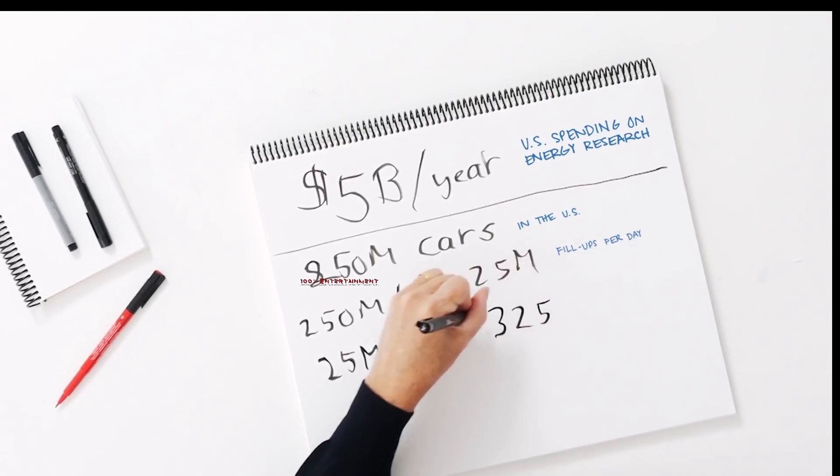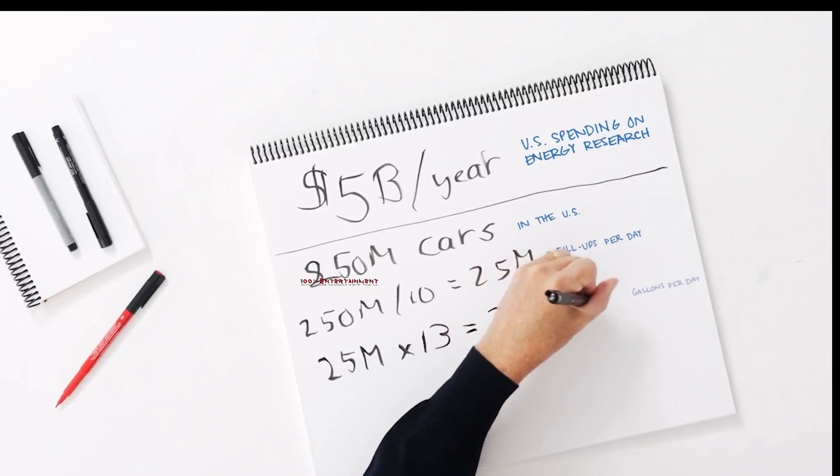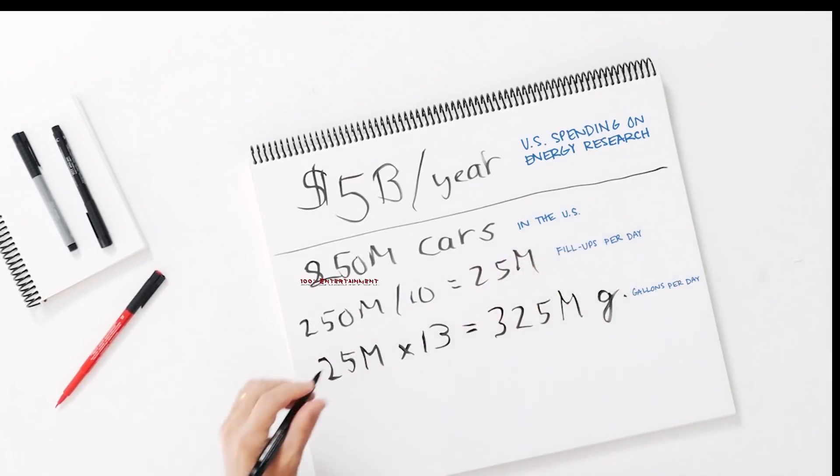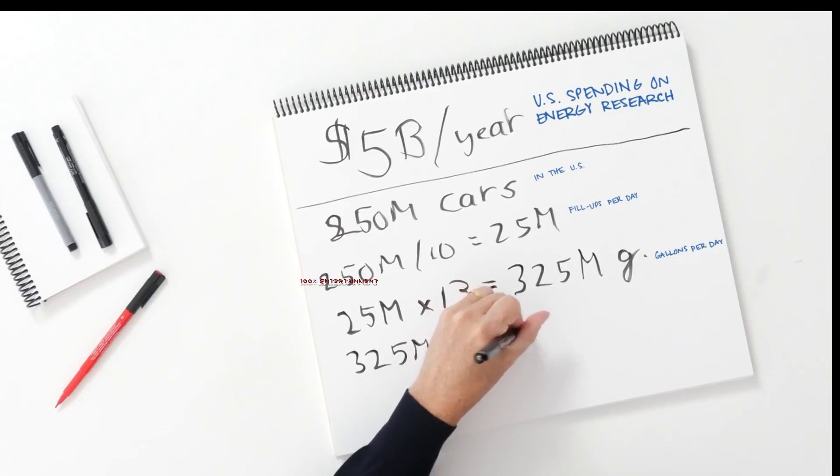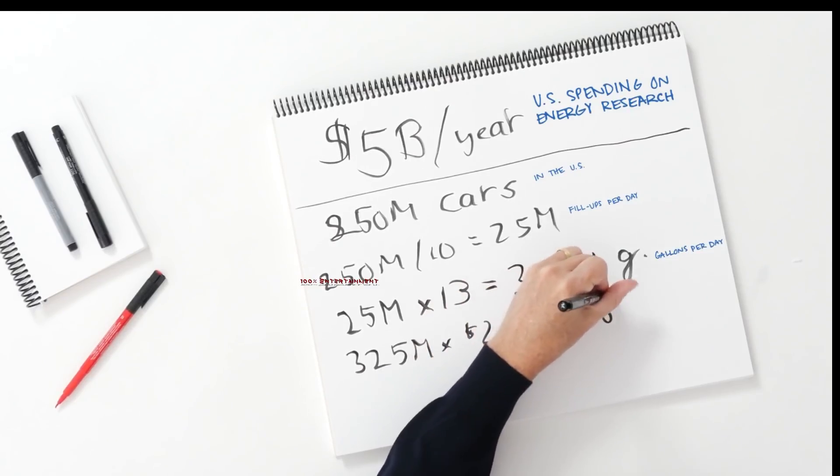Now let's say our car holds 13 gallons. That's 325 million gallons every day. The price has been going down but still about $2.50. And so we get about $813 million per day on gasoline.